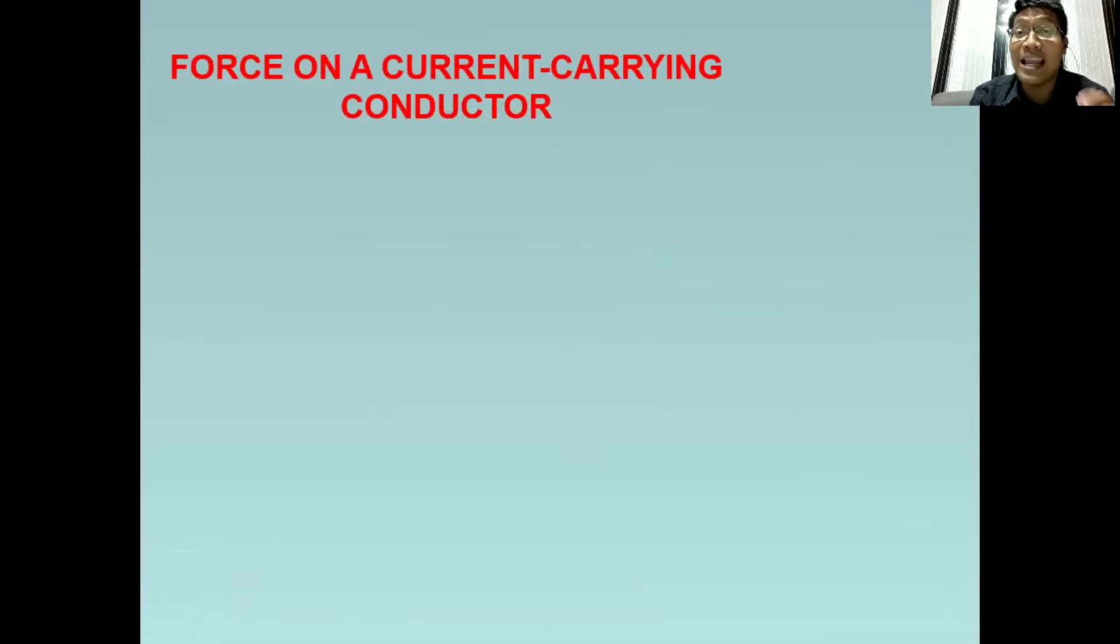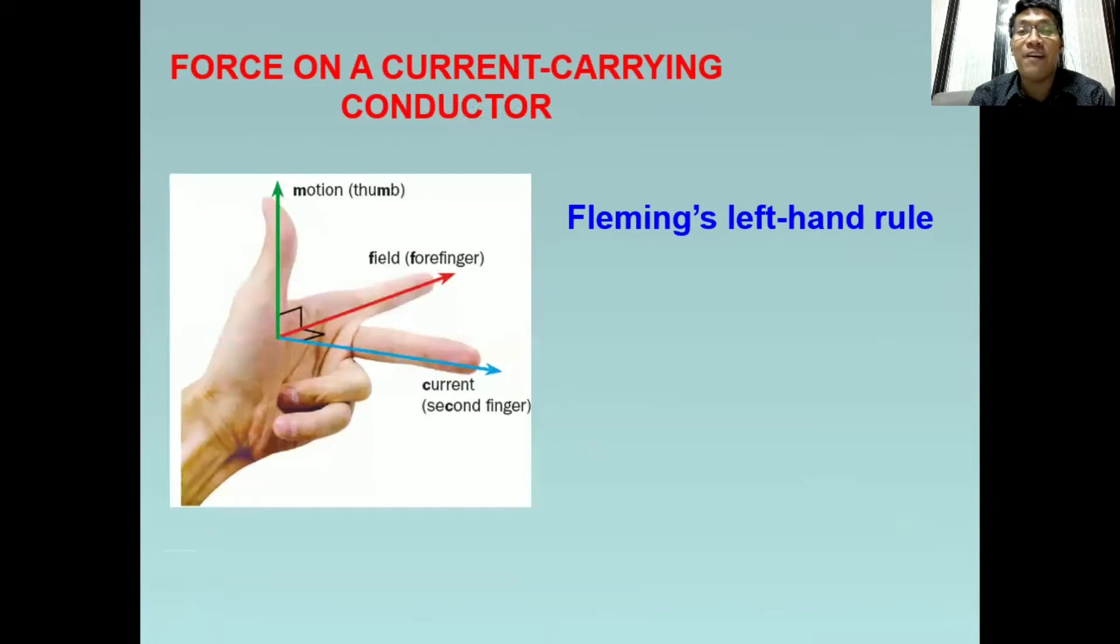Paano nga ba gamitin at i-analyze ang Fleming's left-hand rule? So itaas ang kaliwang kamay at kunin ang unang tatlong daliri: the thumb, the forefinger, and the middle finger. And these three fingers will signify or represent a certain aspect in this lesson. So ang thumb ay ang representation ng ating force, direction of force. Then ang ating forefinger or pointing finger ay para sa field or magnetic field. Then ang ating middle finger ay para naman sa direction ng current.